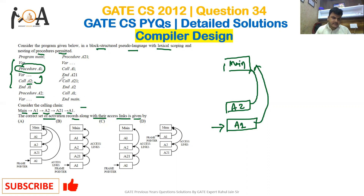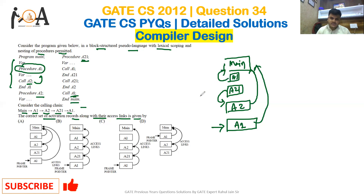Procedure a2 calls a21, and since a21 is nested under a2, a21 will be pointed to a2. Then we are calling a1 again, and this a1 will again report to main because it is outside the body of main. So a21 points to a2, a2 points to main, and a1 again points to main.